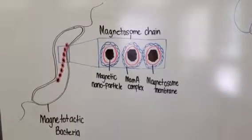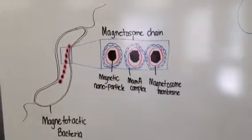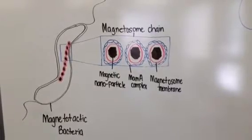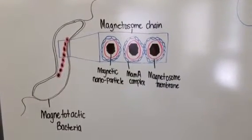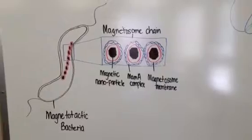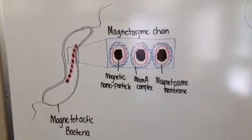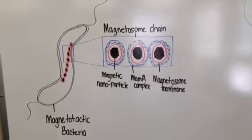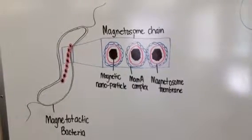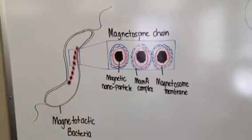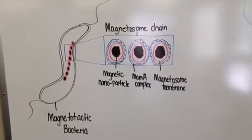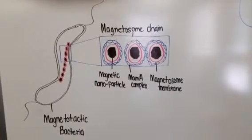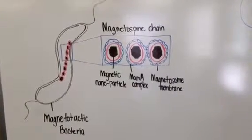In most magnetotactic bacteria, the magnetosomes are arranged in one or more chains. Magnetic interactions between the magnetosome crystals in a chain cause their magnetic dipole moments to align parallel to each other along the length of the chain. The magnetic dipole moment of the cell is usually large enough so that its interaction with Earth's magnetic field overcomes thermal forces that tend to randomize the orientation of the cell and its aqueous surroundings.